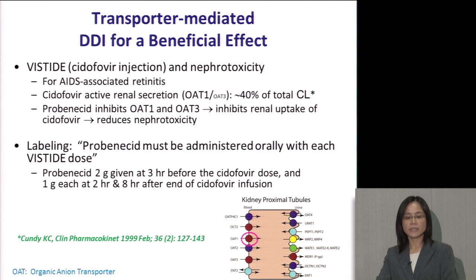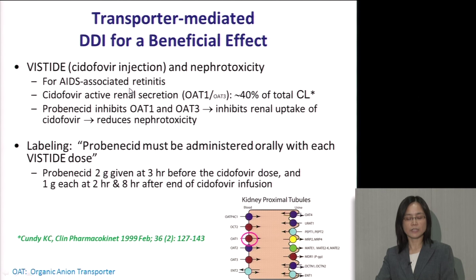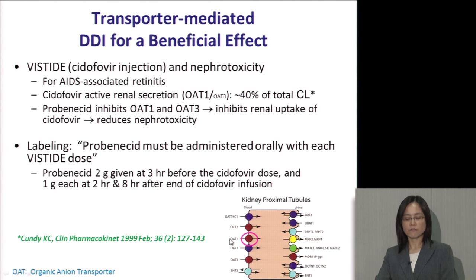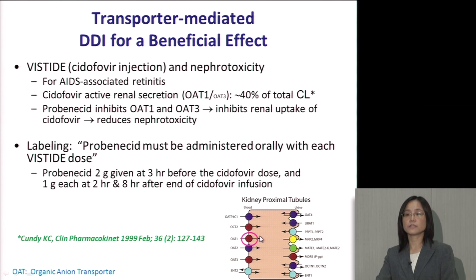Besides side effects caused by transporter-mediated DDI, this can also be used for beneficial effect. For example, cidofovir, used for AIDS-associated retinitis, is actively secreted in the kidney from the basolateral blood side to urine. OAT, an anion transporter on the basolateral side of the kidney cell, mediates cidofovir from blood into the cell. Probenecid, a known OAT inhibitor, inhibits uptake of cidofovir into the kidney cell, thus reducing its nephrotoxicity. Because of this DDI, cidofovir labeling recommends co-dosing with probenecid to avoid nephrotoxicity.